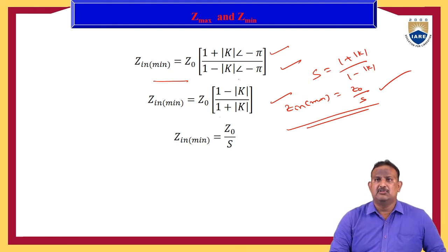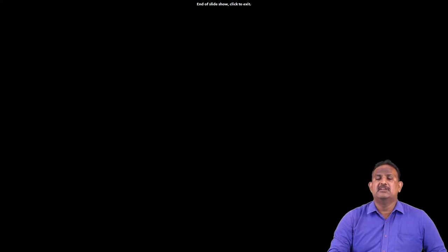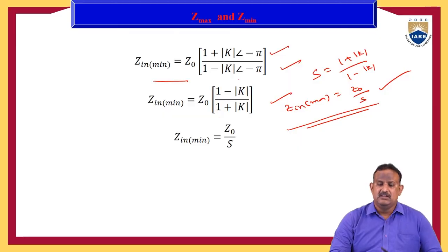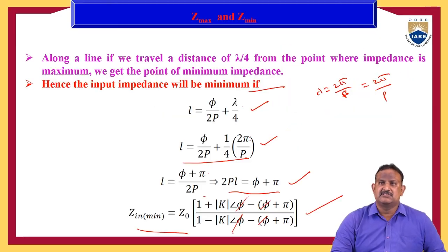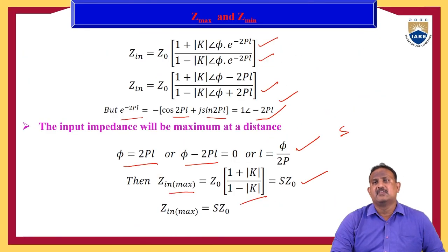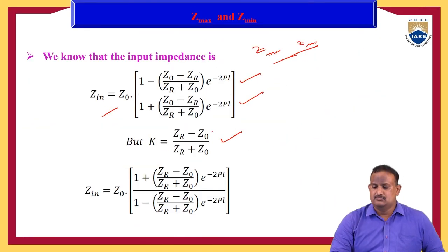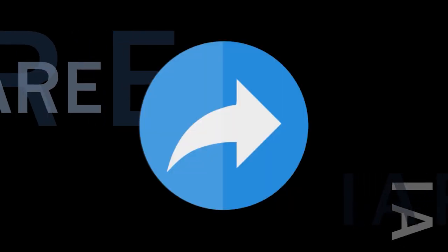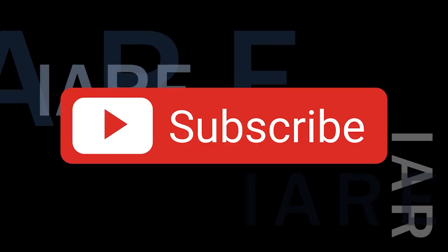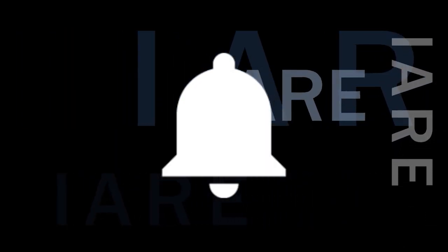So this is about the minimum impedance, maximum impedance, and different lengths of a transmission line. Thank you — like, share, and subscribe, and hit the bell icon for more updates.